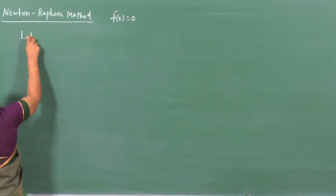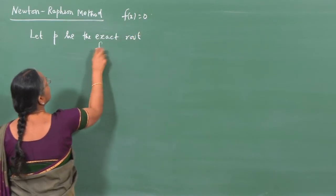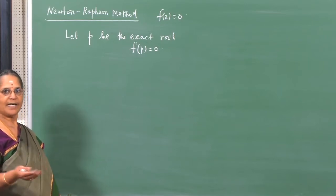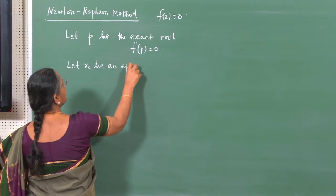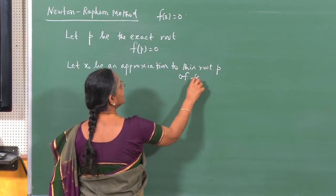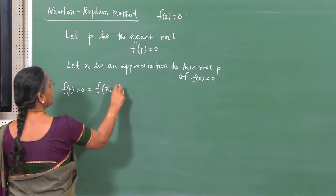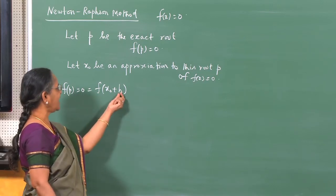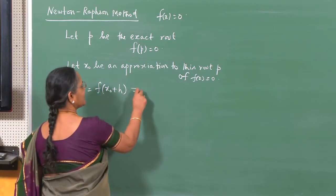Let us assume that p is an exact root of the equation, meaning f(p) = 0. But our goal is to determine this p. So let us start with some initial approximation x₀ to this root p. Since x₀ is an approximation, I have made some error h. So f(p) = 0, which is f(x₀ + h) = 0. I would like to expand f(x₀ + h) about x₀.